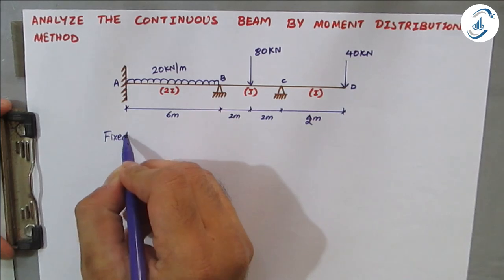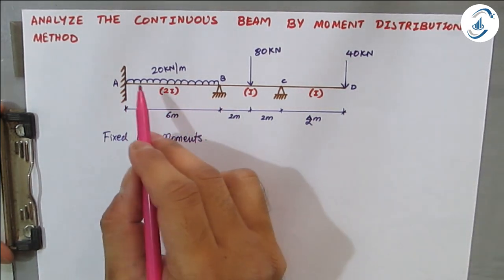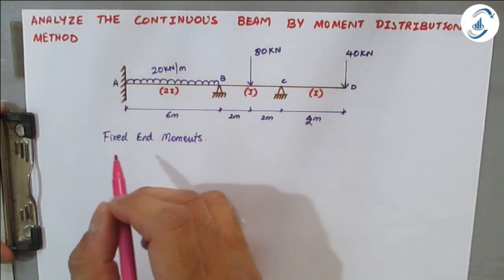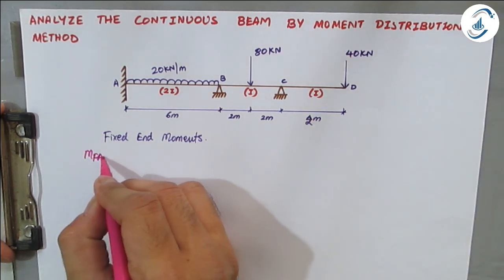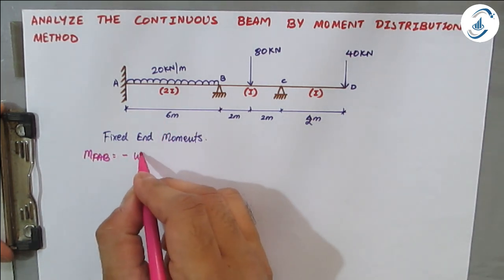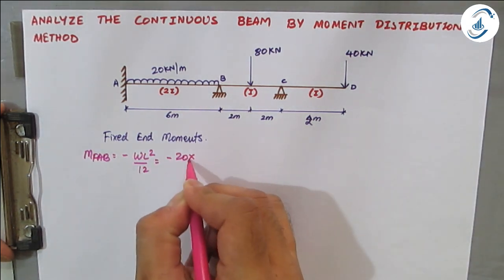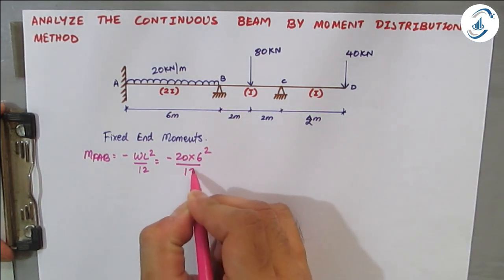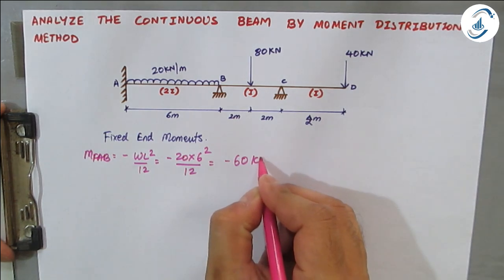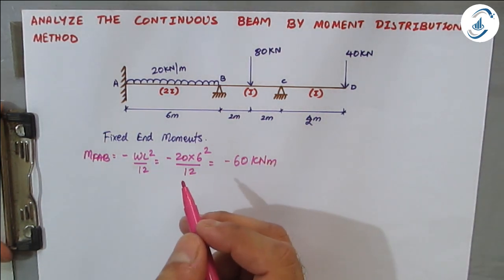First we find fixed end moments. MF_AB is anti-clockwise, so it is negative. For a UDL case the formula is WL²/12, so with W = 20 and L = 6 meters, MF_AB = −60 kilo-newton meter.